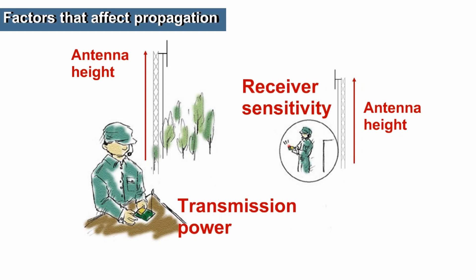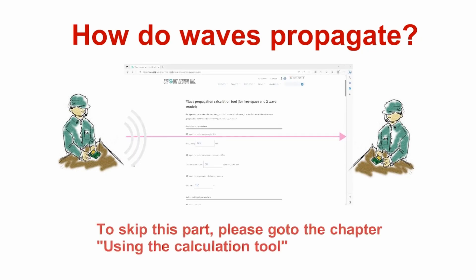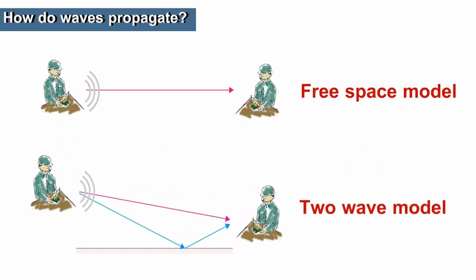I will take you through obtaining and understanding the values from the tool so you can maximise your communication range and get the best possible results. Before we can discuss communication range, we must understand how electromagnetic waves such as radio waves move through space. Our calculation tool can simulate two scenarios: free space and two-wave model.